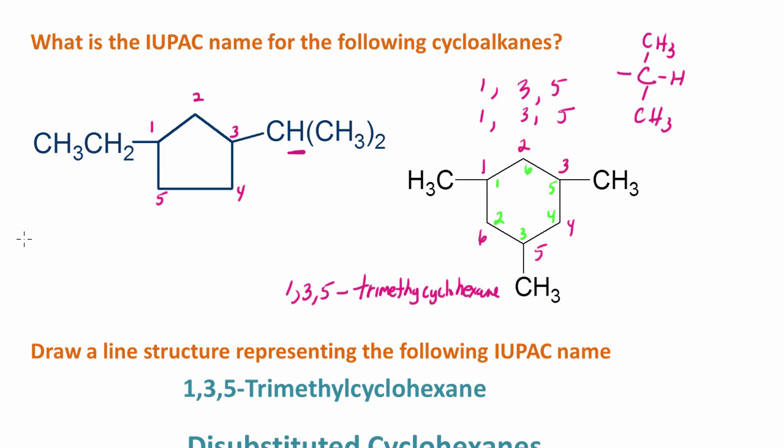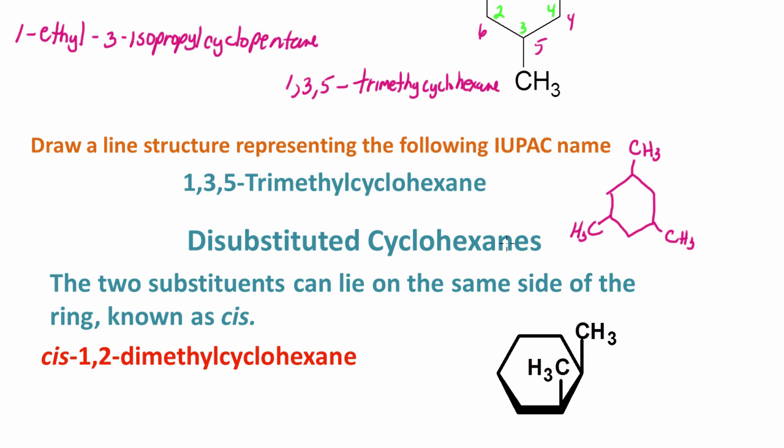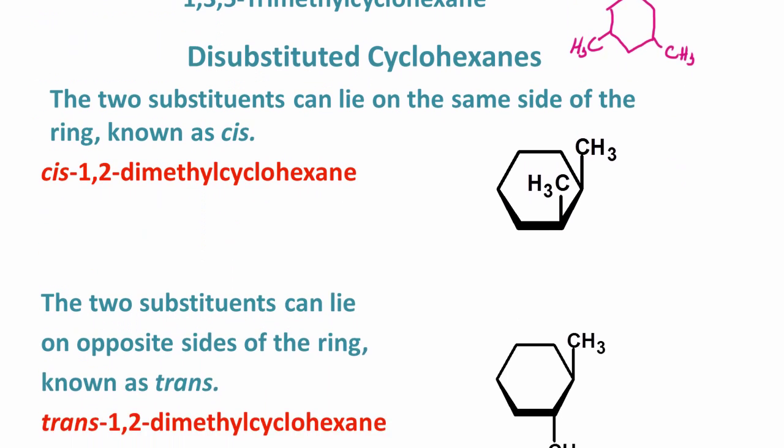What we have here is 1-ethyl-3-isopropylcyclohexane. This is a five-membered ring, so this would be cyclopentane. Just practice naming the cycloalkanes.